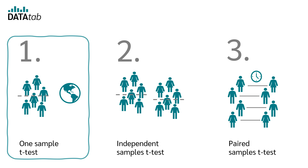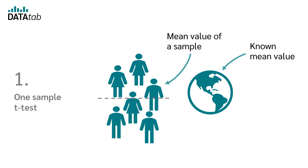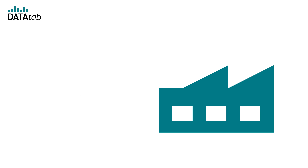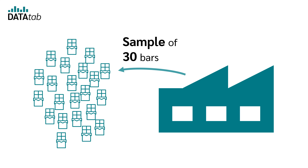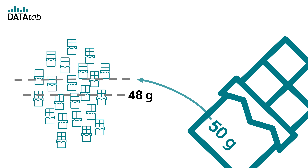When do we use a one-sample t-test? We use it when we want to compare the mean of a sample with a known reference mean. For example, a chocolate bar manufacturer claims its bars weigh an average of 50 grams. We take a sample of 30 bars and weigh them. The mean value of this sample is 48 grams. We can use a one-sample t-test to check if 48 grams is significantly different from the claimed 50 grams.